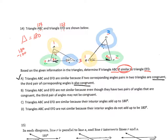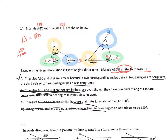Answer A says triangles ABC and EFD are similar because of two corresponding angle pairs, and since two triangles share two congruent angle pairs the third must also be congruent — that is true, all missing angles matched at 80 degrees and all angles add up to 180. Answer B says they are not similar — I'll stop there because they are similar. Answer C says they're similar because interior angles add up to 180 — that's true for all triangles but doesn't specifically prove similarity. So the answer is A.